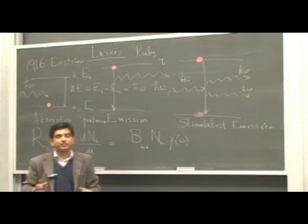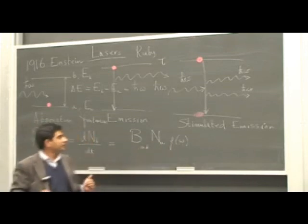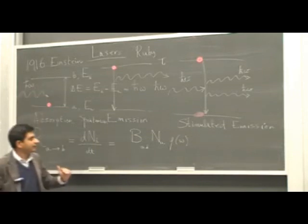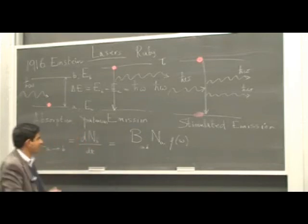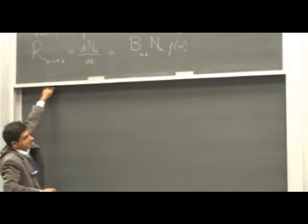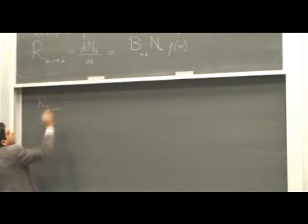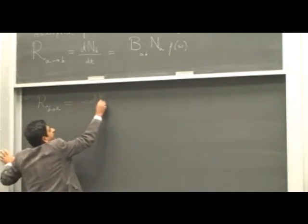How much photons are available inside the radiation field with precisely the energy omega? Because in the process of absorption, a photon has to be absorbed. Therefore a photon has to be available at this frequency. So the rate of transitions making transitions from A to B is given by this expression. Now we have a rate of emission as well. Let's denote the rate of emission by R going from B to A. This rate of emission is the rate at which the upper level is depleted, the rate at which the upper level is depopulated. So this rate is minus dN_B/dt.